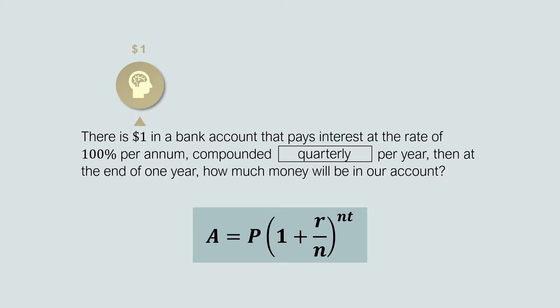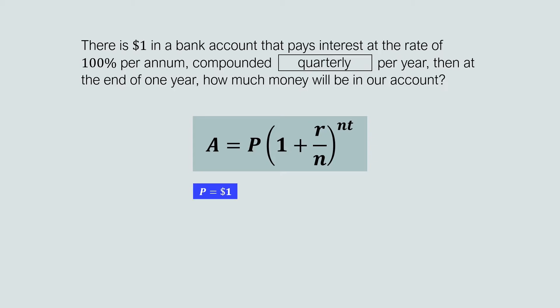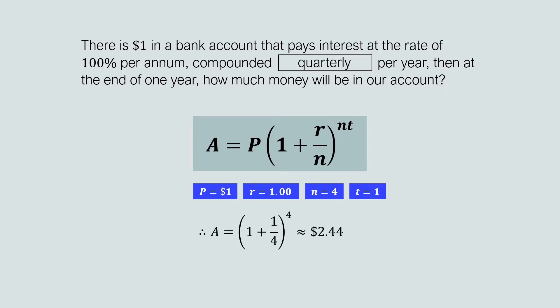We can use the compound interest formula, which we will consider as assumed knowledge in this video. The principal amount is $1, the interest rate per annum is 100%, which we can rewrite as 1.00 in decimal form. N equals 4 since we are compounding quarterly — 4 times per year — and T equals 1 since we want the final balance at the end of one year. This gives us $2.44, meaning our account would have grown from $1 to $2.44.